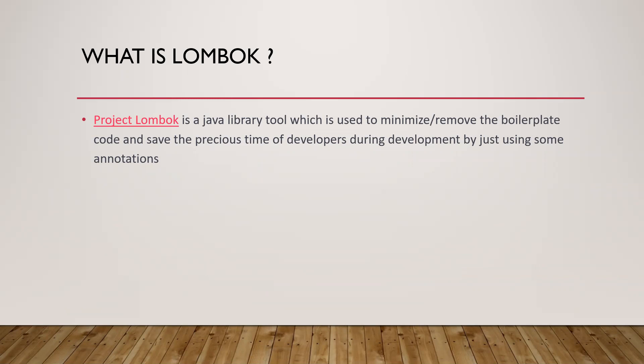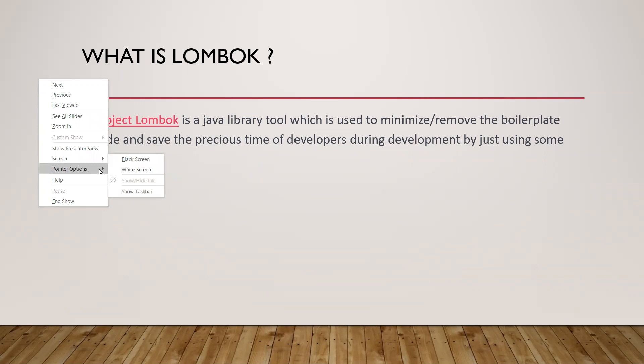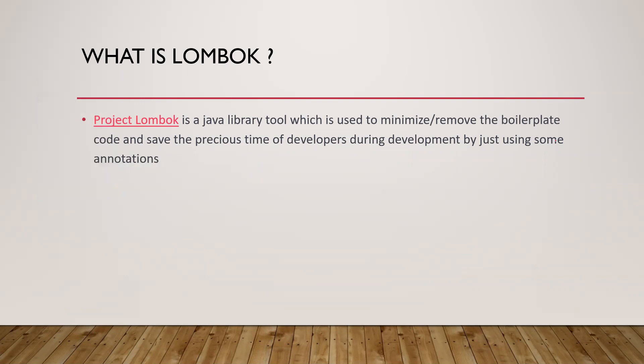Project Lombok is a Java library tool which is used to remove boilerplate code and save the precious time of developers. You don't need to write boilerplate code anymore. For example, when you create a POJO class — maybe an Employee, Student, or Product — you are generating setter methods, getter methods, toString methods, constructors, and everything as a programmer.